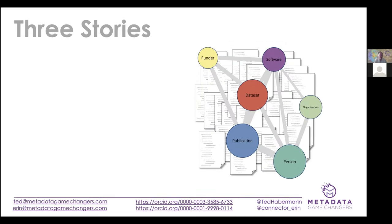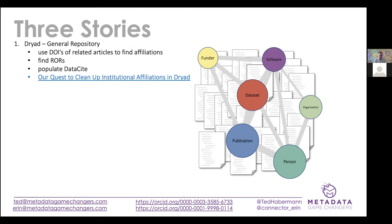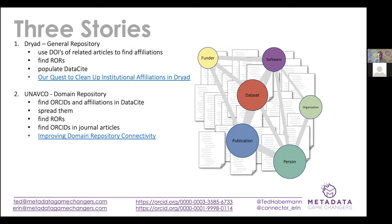To summarize three different stories: first, the Dryad story — using DOIs in Dryad to find affiliations for authors, finding RORs for those affiliations, and populating Datacite, then seeing the effects in Datacite Commons searches. Second, UNAVCO — a great domain repository with a strong community — finding ORCIDs and affiliations in Datacite metadata, spreading them throughout that repository, finding RORs and ORCIDs in journal articles and showing how to bring those into Datacite metadata. There's a paper recently published describing that process.